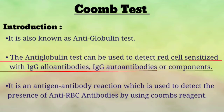The anti-globulin test, or Coombs Test, is used to detect red cells sensitized with IgG allo-antibodies and auto-antibodies and their components. It is an antigen-antibody reaction which is used to detect the presence of anti-RBC antibodies using Coombs reagent.